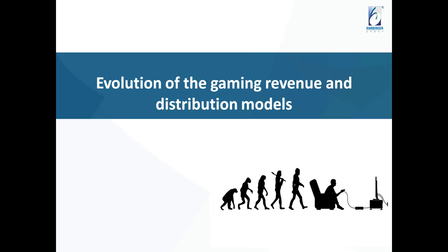Starting with the evolution of gaming revenue and distribution models: the video gaming industry has gone through five different models — arcade, retail, digital distribution, subscription, and virtual goods. Before diving in, two observations demand attention. First, these models are by no means mutually exclusive; they go hand-in-hand. For example, people spend money on arcade games as well as consoles, and users may buy a mobile game and also sign up for MMO games.